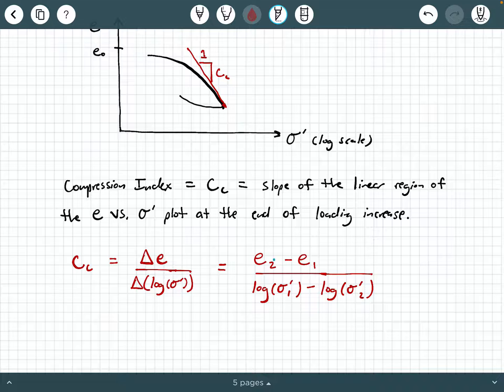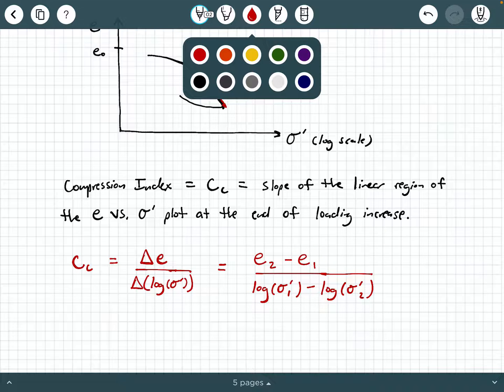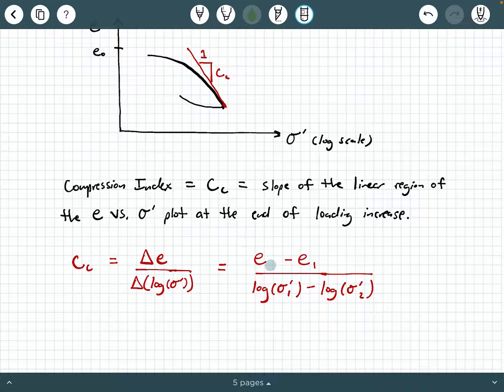Now, one thing I want you to be careful about, the subscripts e two and e one are not from the first and second void ratio and stress values that we talked about in our previous video. This is just meant to be two adjacent data points. So if you want to, maybe instead of e one and e two, you could call this e sub i plus one minus e sub i. And then in the denominator, we have log of sigma sub i minus log of sigma sub i plus one. Different textbooks may label these subscripts differently. Basically it's just two adjacent data points that would be affiliated with this straight line tangent line or the slope of the loading curve. So again, that's what's called the compression index.